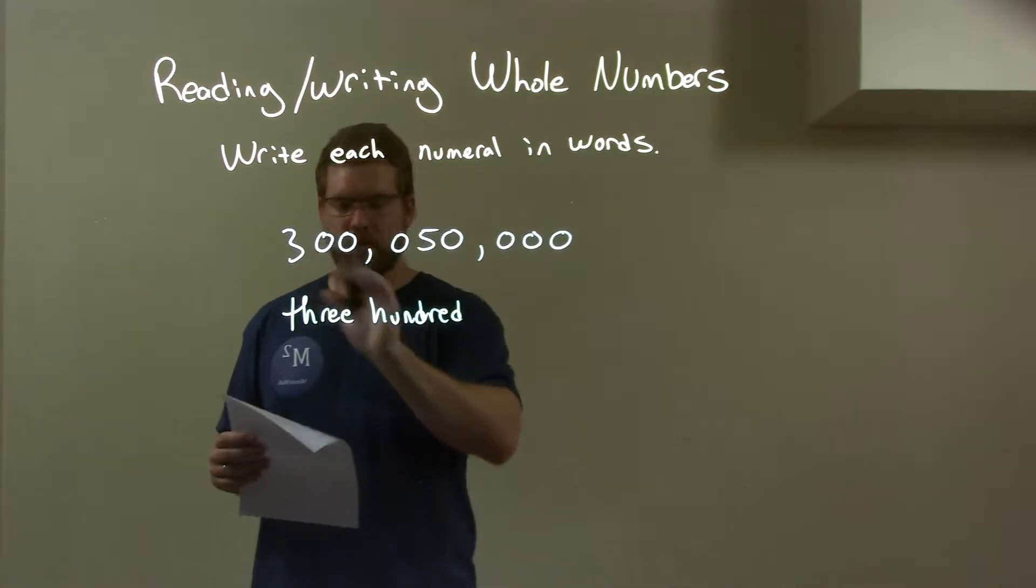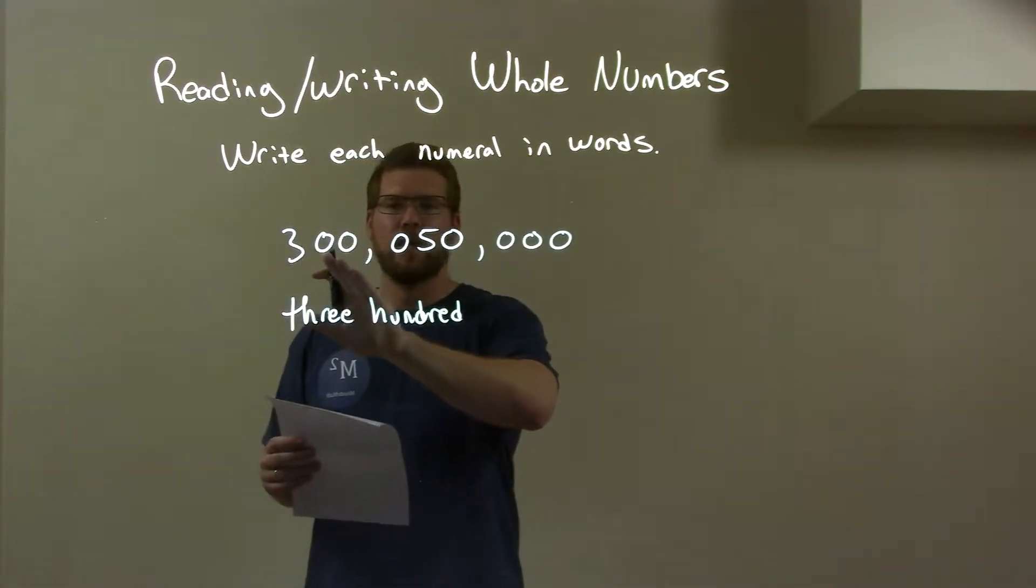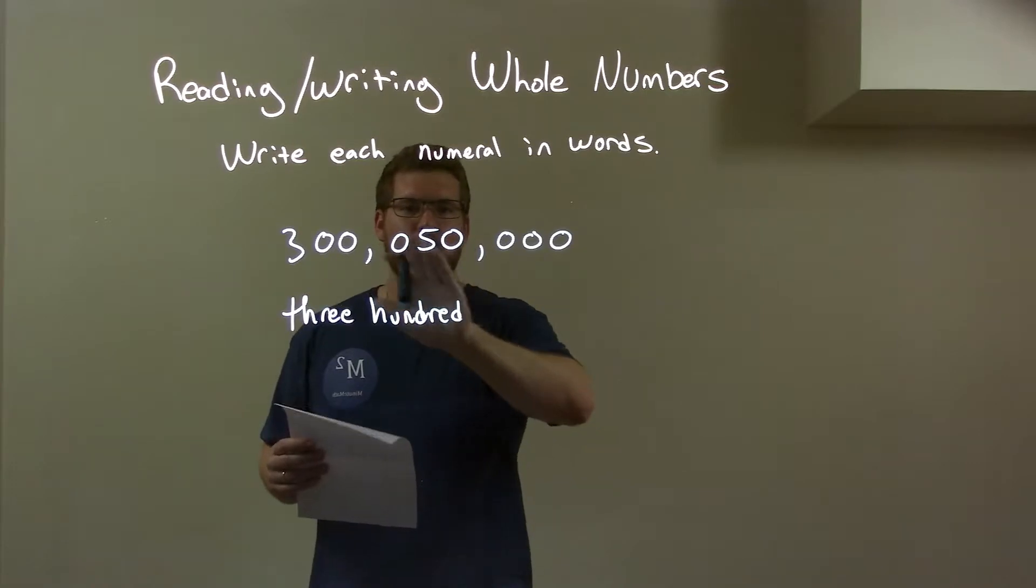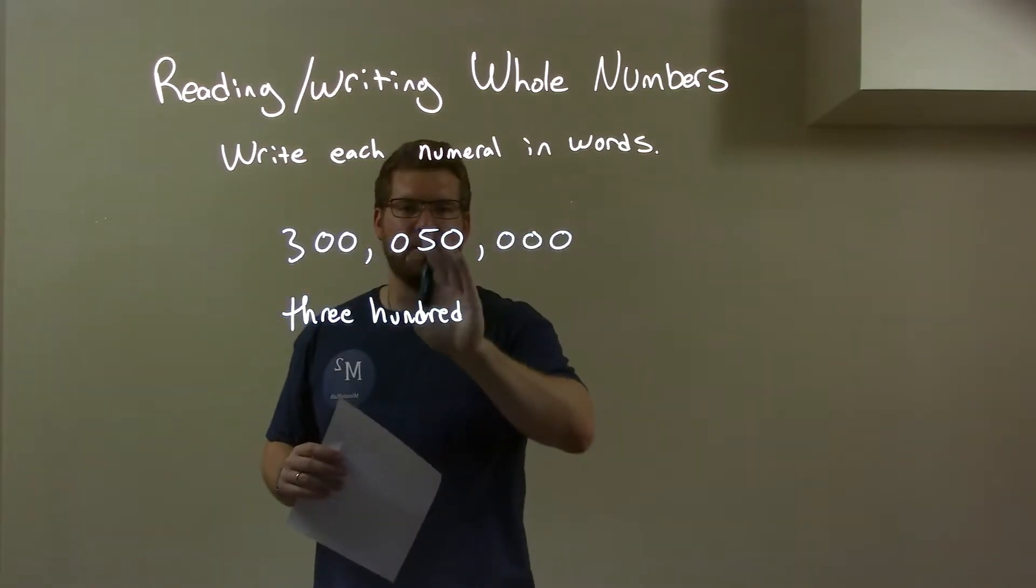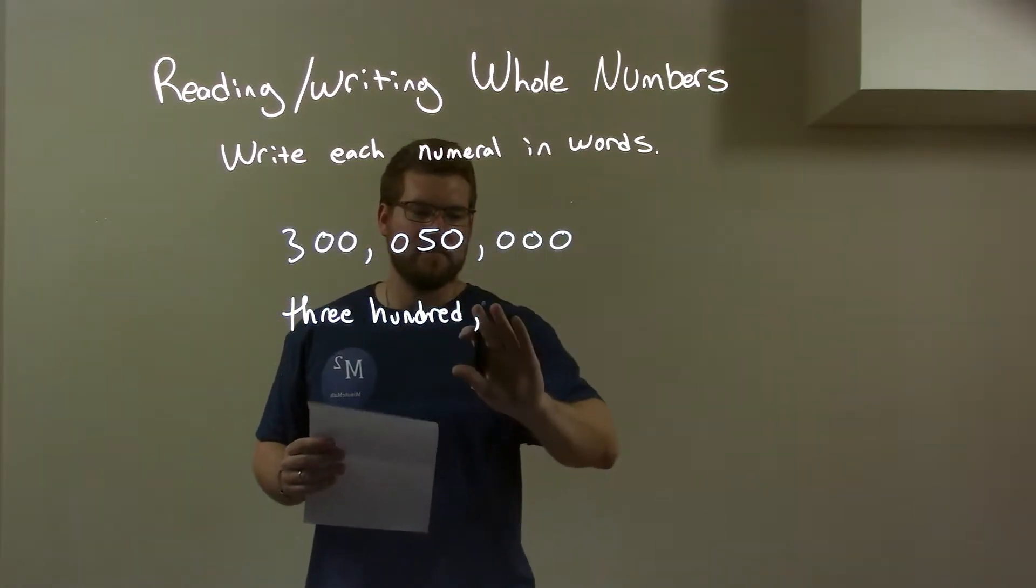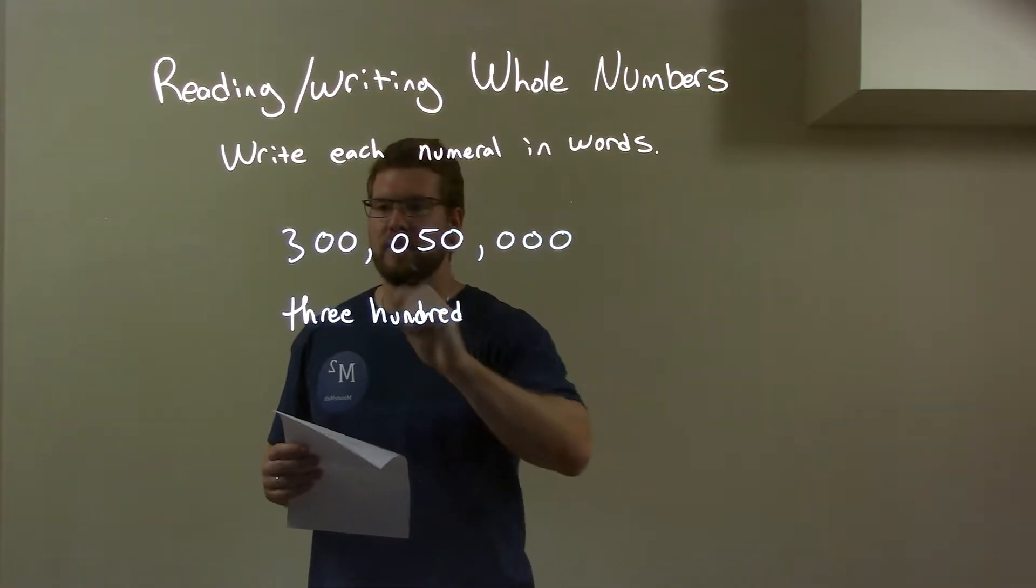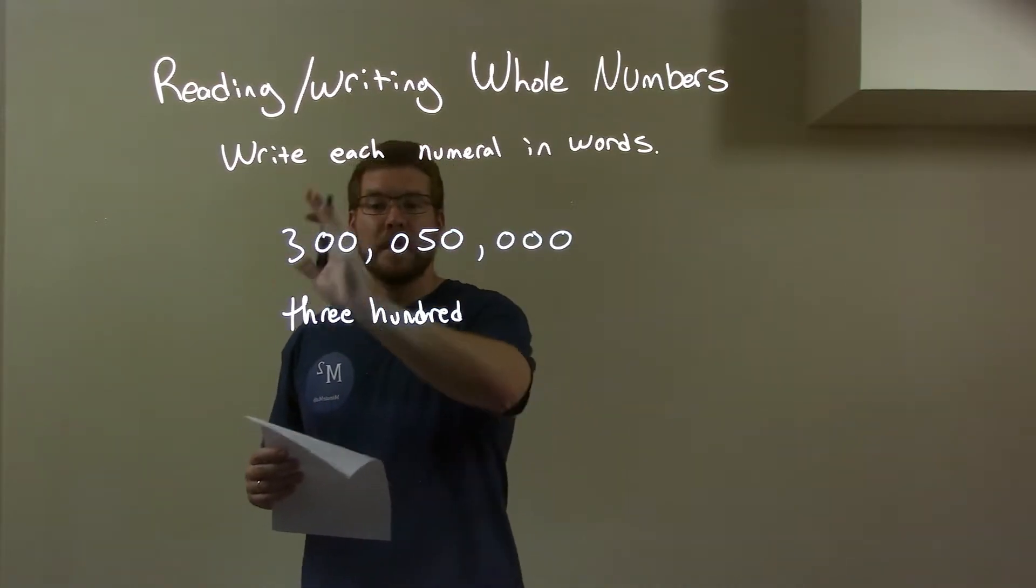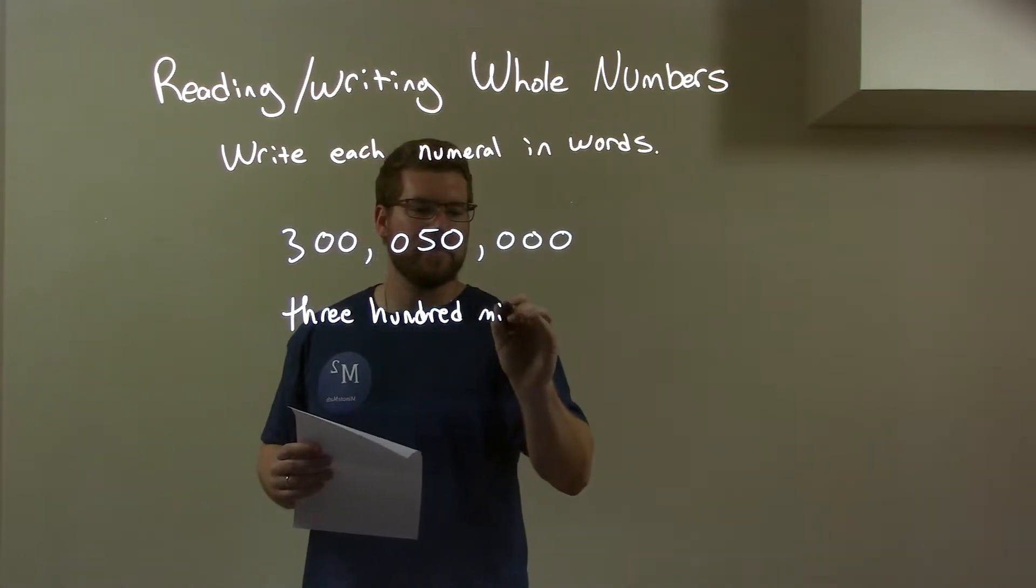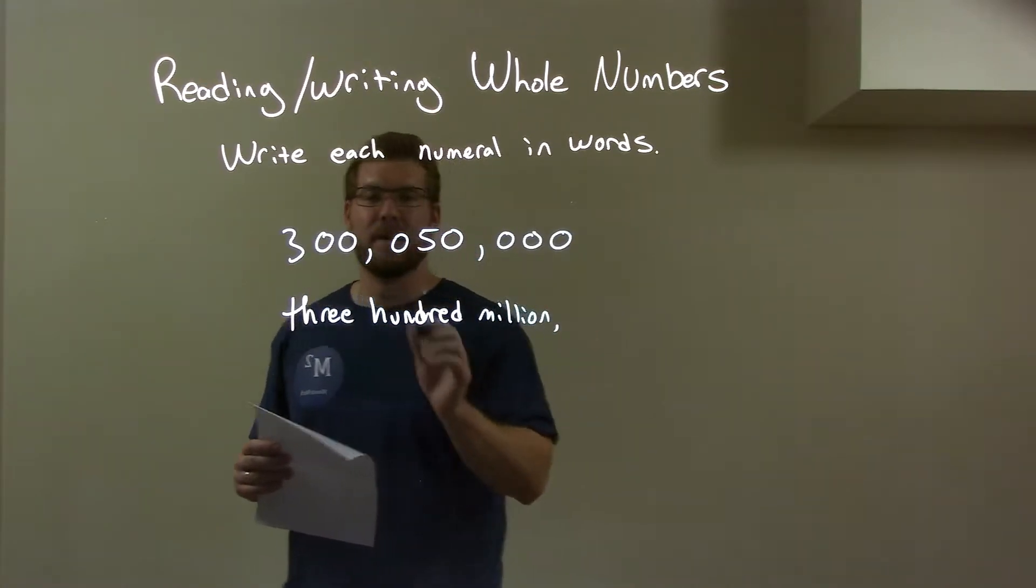So we have 300 there. Now I don't see any numbers besides zero until I get to the five, right? So what do we see if we ignore everything else? Well, actually, what type of 300 is this? 300 in the millions area. So 300 million. Got ahead of myself.